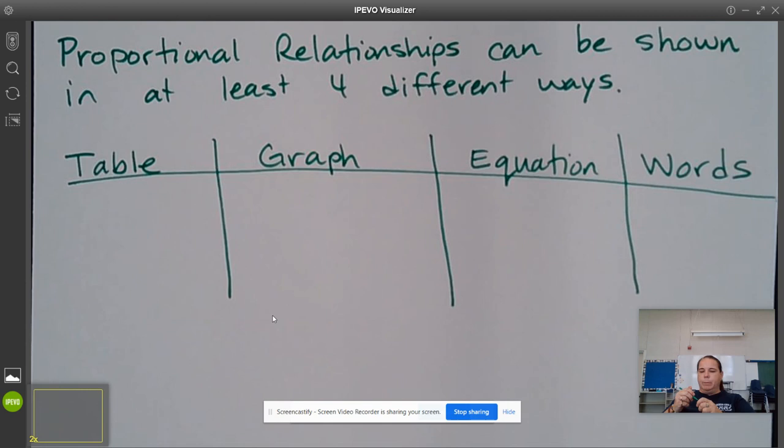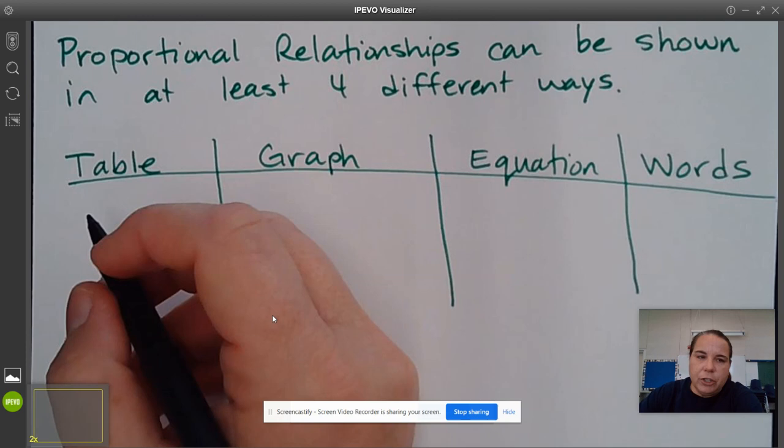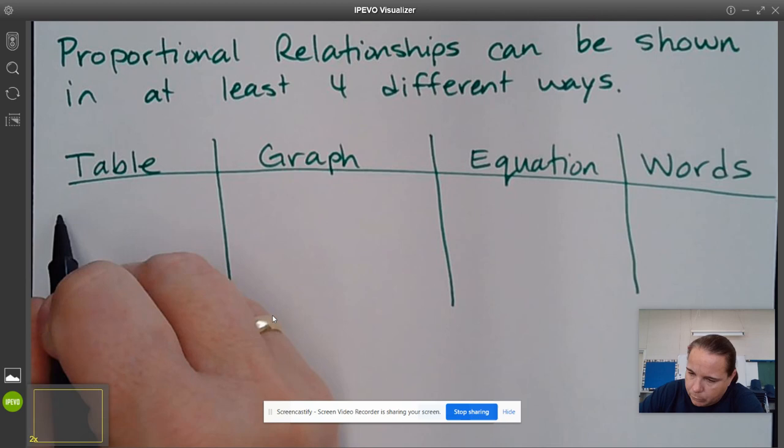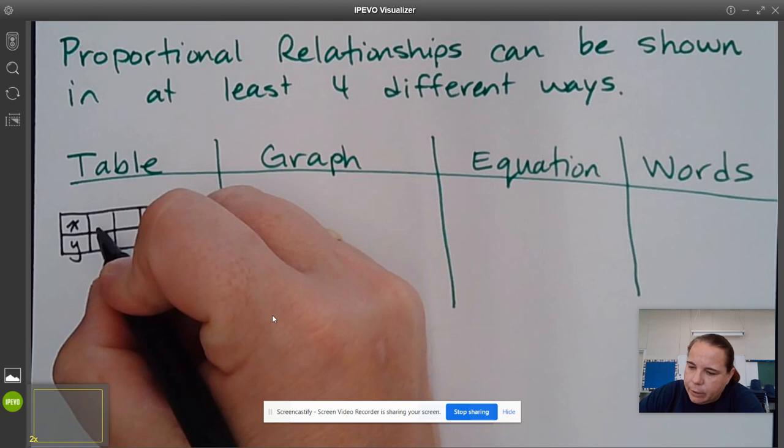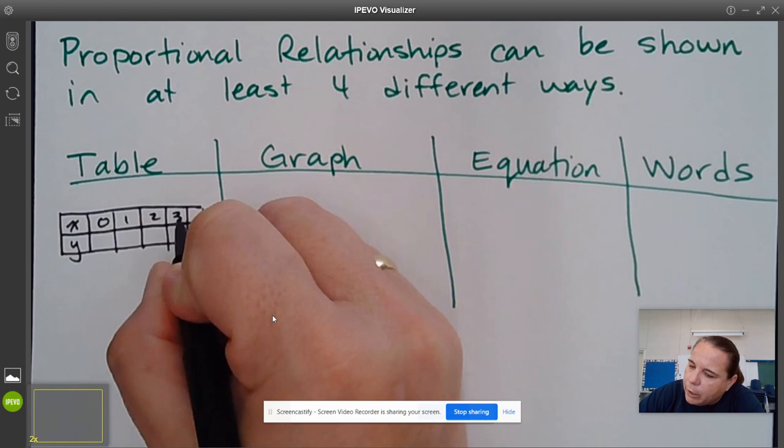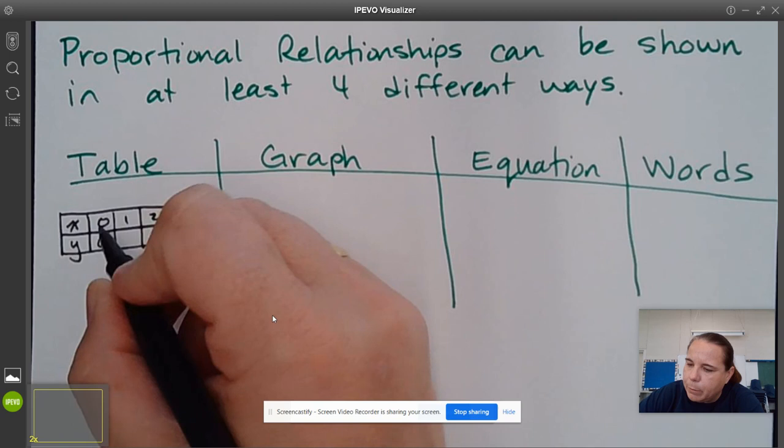So these are different ways that these relationships can be shown or represented. So if we're looking at a table, which is what we're going to be working on starting in 3.1, we're going to look at proportional relationships in a table. So the table looks something like this. You have your X and your Y. And then you have some numbers in here, like let's say it's going to 0, 1, 2, 3, 7. And so then this is always going to be 0 in a proportional relationship.